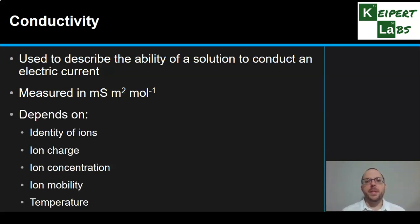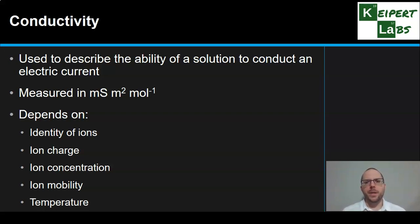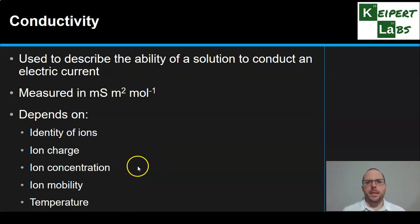The conductivity of a solution depends on a range of different factors. The identity of the ions able to move in that solution and their charge — do they have one plus, two plus, three plus, or a similar magnitude of negative charge? How concentrated are they? How mobile are they, based on their mass and charge? And also the temperature of the solution, because that affects the kinetic energy and ability of those particles to move. So particularly important factors are ion concentration, ion charge, and ion mobility.